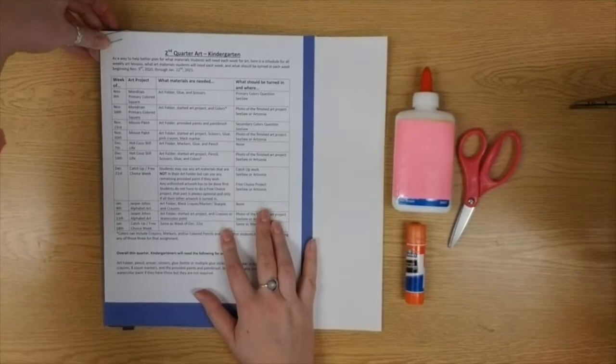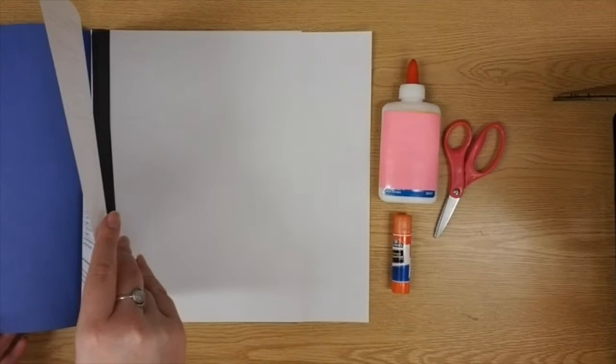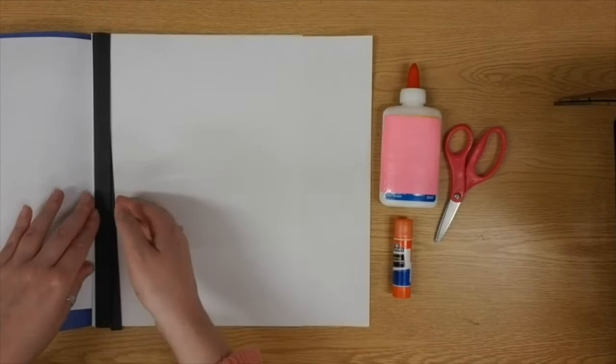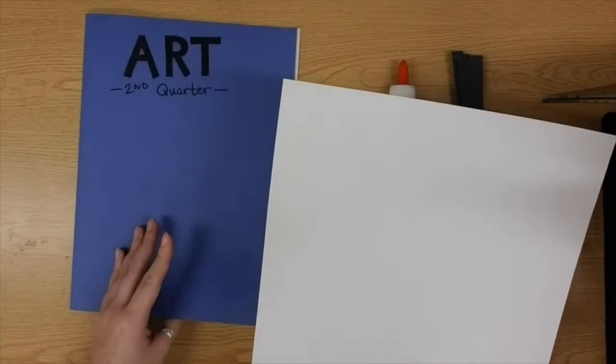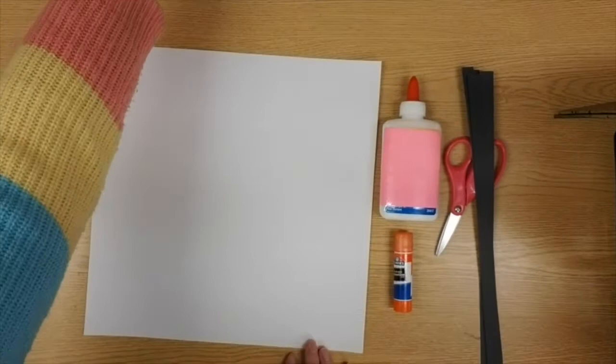So I'm going to go ahead now and open up my art folder. You can tuck this piece of paper either inside or you can save it somewhere else. What we need out of our art folder today are the first two things you'll find. The first thing you should find are some long thin black lines, very similar to the lines we saw in Mr. Mondrian's first piece of art, and one very large square piece of paper. Those are the only things you should be getting out of your art folder for this project.